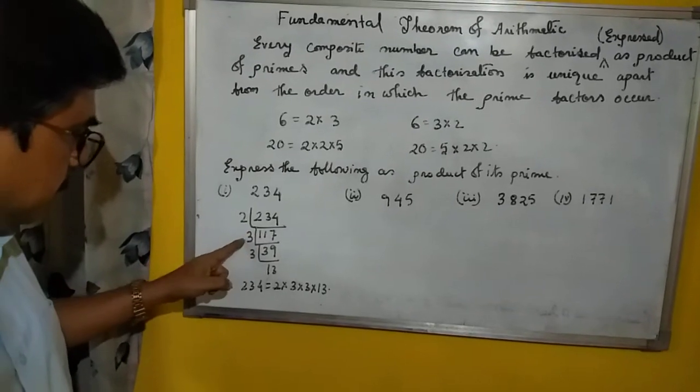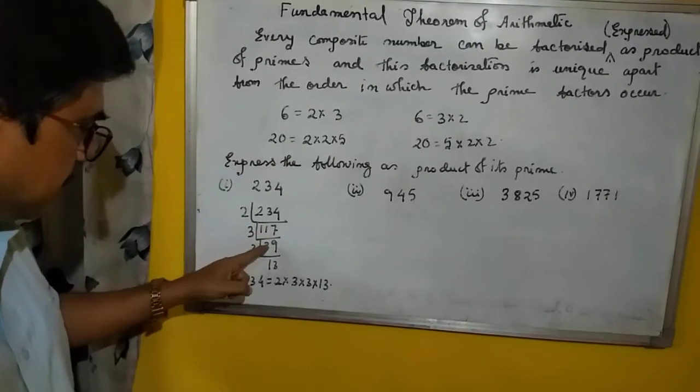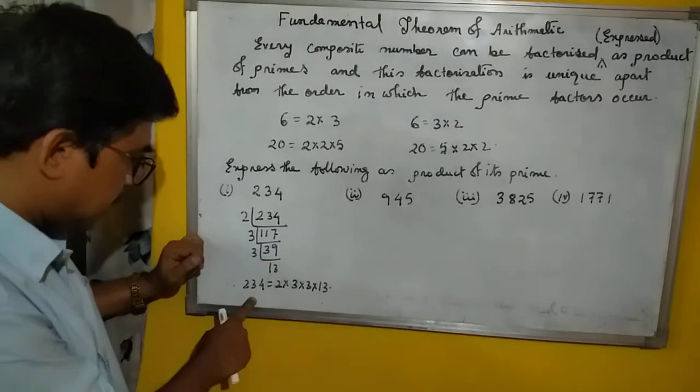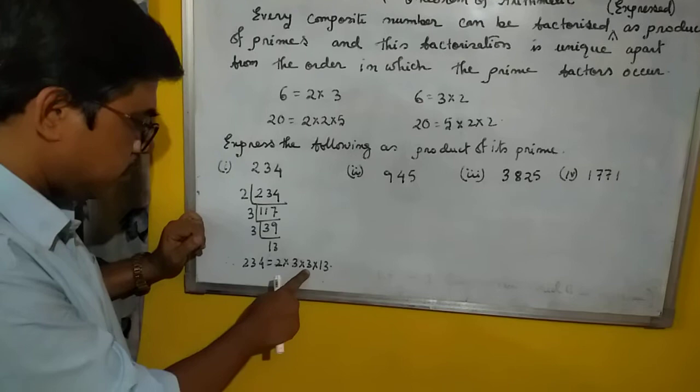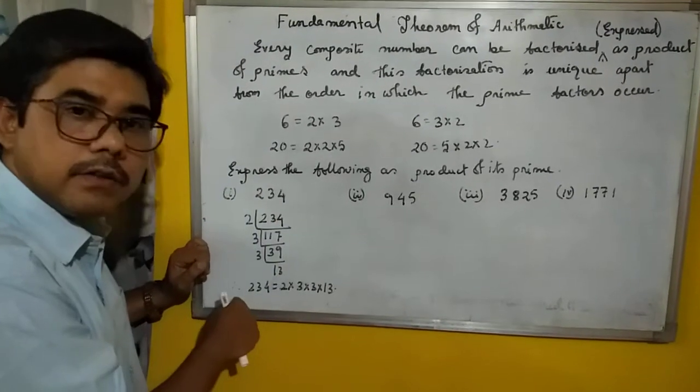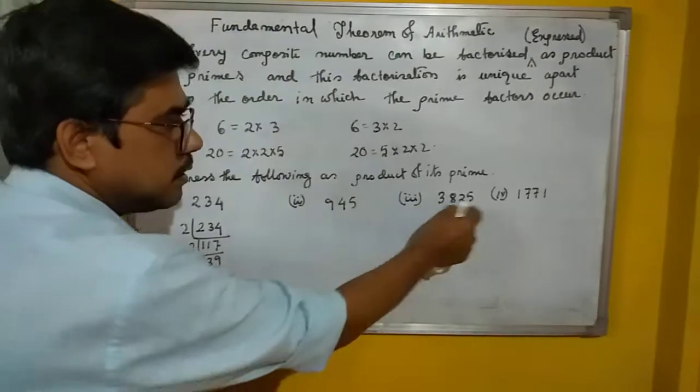Divide by 2 first. Then divide by 3 to get 39. Again by 3 to get 13. So 234 can be written as 2×3×3×13. It is easy - you already learned this in lower classes. Now you can try these three sums.